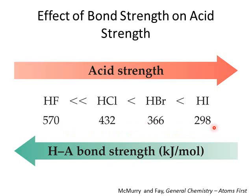As you go down the group, the bond strength decreases and the acid strength increases. The atoms are getting further apart because the radius of the halogen increases. Therefore, as the bond strength decreases, the acid strength increases.